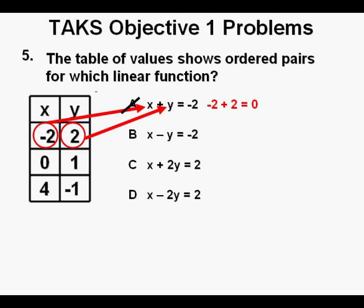We go through the same process to check answer B. And that turns out to be negative 2 minus 2, which equals negative 4, and that's not negative 2, so we cross off B as well.